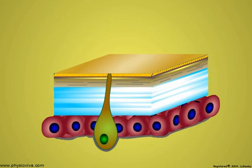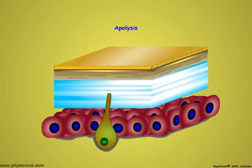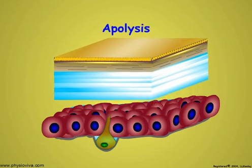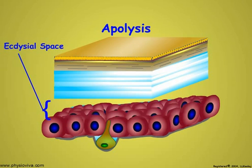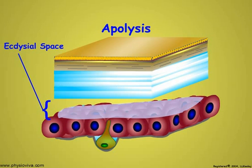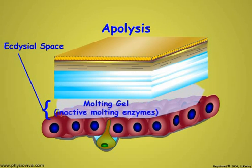The existing structural cuticle separates from the epidermal cells. This is termed apolysis. The resulting ecdysial space between the endocuticle and the epidermal cells is filled with a gel that contains inactive chitinase and protease enzymes.